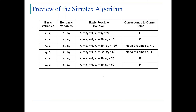By identifying the non-basic variables and the basic variables, we were able to solve for two of them by making the non-basic variables equal to zero and solving for the other two. This allowed us to find the corresponding corner points in a graph for a two-decision-variable linear program.